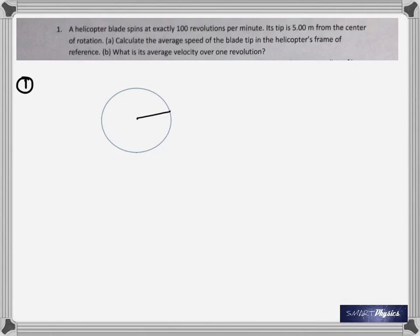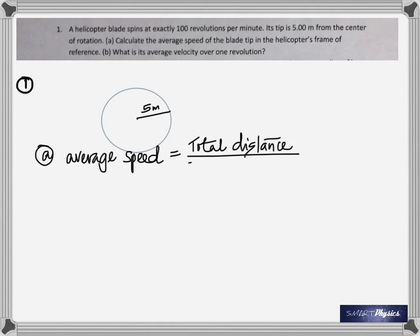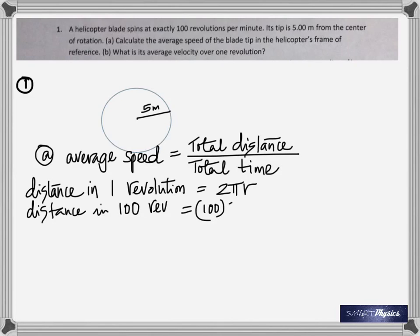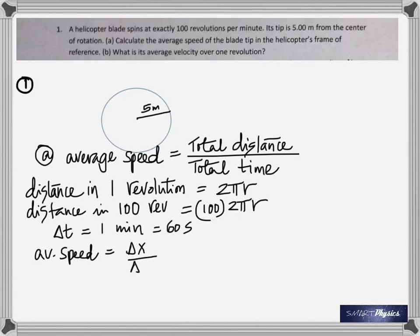When you're asked to find the speed, it's total distance divided by total time. But here it's talking about 100 revolutions per minute — that's not a proper unit because time has to be measured in seconds. So first thing you do is change revolutions per minute into seconds. Average speed is total distance divided by total time, and distance is the circumference, which is 2π times the radius — that's the distance in one rotation.